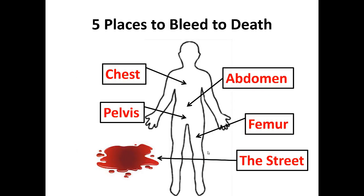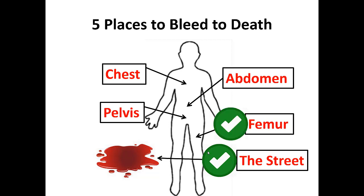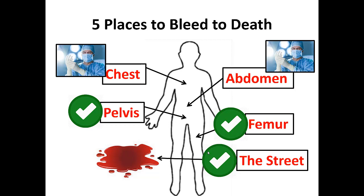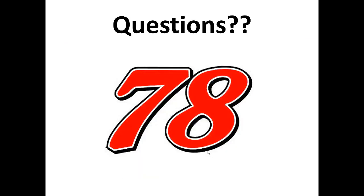Quick review: there are five places to bleed to death. Assess these places and think about where your patient is bleeding and how to control it. For exsanguinating hemorrhage on extremities, control with direct pressure or a tourniquet. You can splint a femur fracture. Use a pelvic binder for pelvic fractures. But if there's any life-threatening chest or abdominal trauma, you need to move even faster, because only a trauma surgeon can stop that bleeding. Please let the 7-8 or myself know if you have any questions.